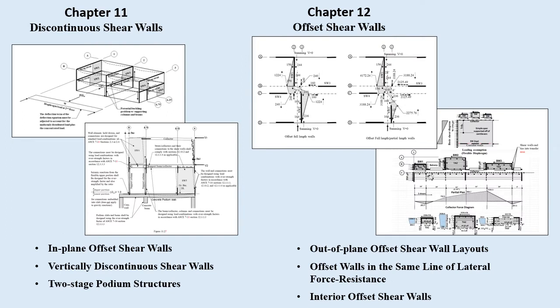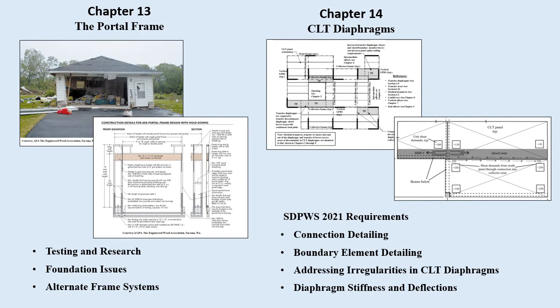Chapter eleven addresses in-plane offset and vertically discontinuous shear walls, and now includes discussions on two-stage analysis podium structures. Chapter twelve covers out-of-plane offset shear walls, offset walls in the same line of lateral force resistance, a detailed discussion on interior offset shear walls, and offset shear walls at exterior wall lines. Chapter thirteen covers portal frames and includes testing and research, foundation issues, and alternate frame systems.